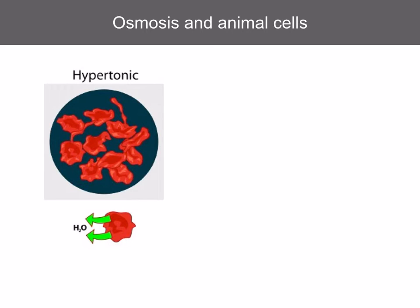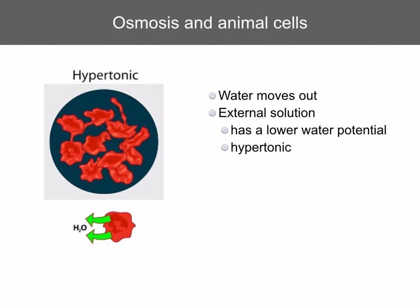If a red blood cell is placed in a solution which is hypertonic, water is going to move out of the cell by osmosis, because the external solution has a lower water potential and it's hypertonic. The cell is going to shrink, and the membrane is going to crinkle.